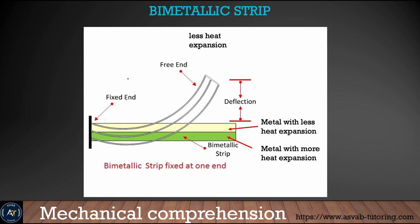The bi-metallic strip is a topic that sometimes appears on the test — many students have asked to learn more about it. A bi-metallic strip is two different materials sandwiched together: metal with less heat expansion on top and metal with more heat expansion on the bottom. When cooled, one part bends upward in a specific direction.